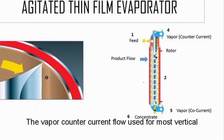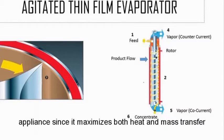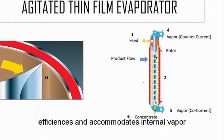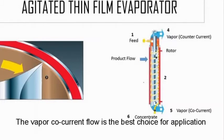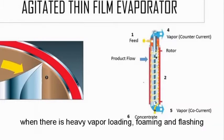The vapor counter-current flow, used for more vertical applications, enhances both heat and mass transfer efficiency and accommodates internal vapor or liquid entrainment separation. The vapor co-current flow is the best choice for applications with heavy vapor loading or for flashing.